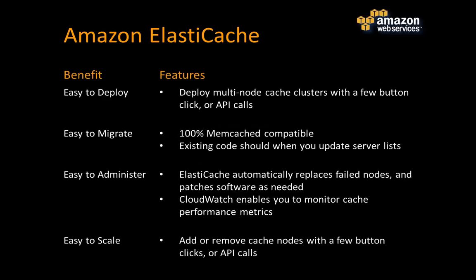From a deployment perspective, you can deploy multi-node cache clusters using just a few clicks in the AWS console or by making simple API calls. Migrating applications already running Memcached is straightforward because the code is 100% compatible — once you update your configurations to point to your new cluster, you're good to go. Administration is simplified: ElastiCache handles node replacement and software patching. CloudWatch lets you monitor about 20 metrics related to cache performance, including cache hits and latency. Scaling is also very straightforward.